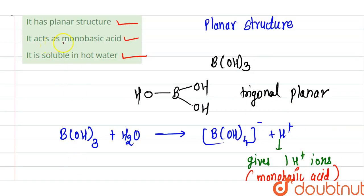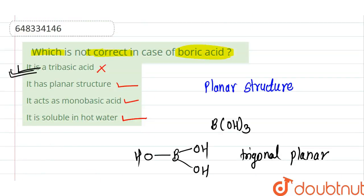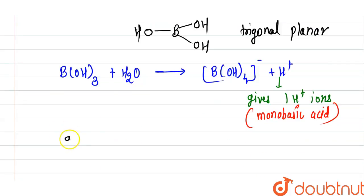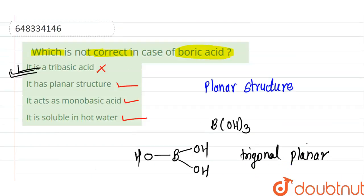It is soluble in hot water — that is a correct statement. Since boric acid is a mono basic acid, it is not a tri-basic acid. Therefore, the answer to 'which is NOT correct in case of boric acid' is option A: it is a tri-basic acid. That is the incorrect statement.